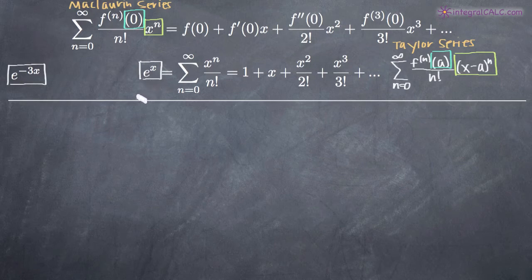What these three formulas allow you to do is substitute any number for x. So in this Maclaurin series formula for e to the x, we've got this x right here. Well what we're allowed to do is put in anything for x no matter what we have in our exponent. In this case, we have negative 3x for our exponent.